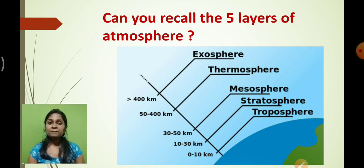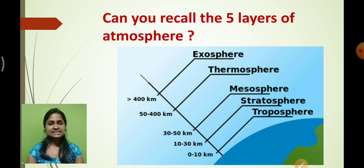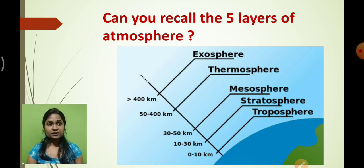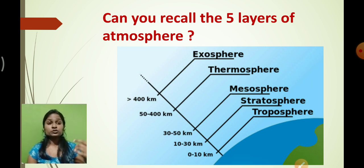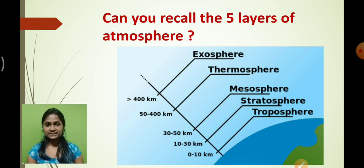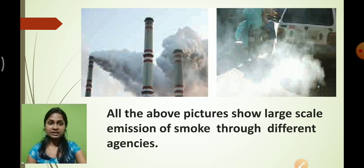Out of the three spheres, if you observe carefully, within the atmosphere there are basically five spheres. Please keep this in mind: troposphere, stratosphere, mesosphere, thermosphere, and exosphere. These are the five spheres present in the atmosphere. Remember this thing very carefully.